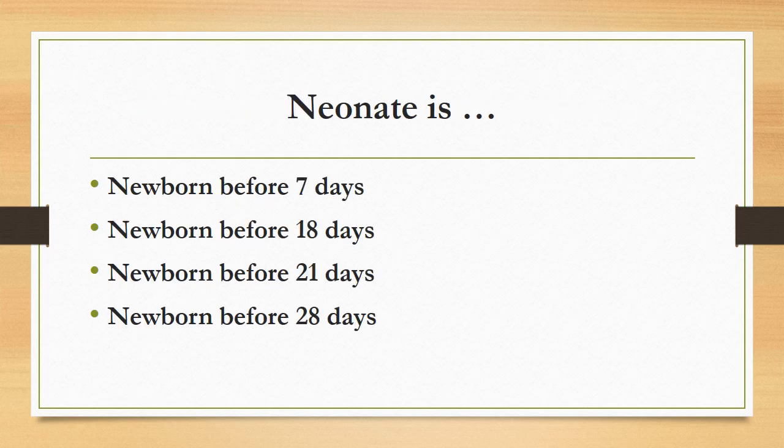A neonate is a newborn before 7 days, before 18 days, before 21 days, or before 28 days? The correct answer is a newborn before 28 days. A newborn up to 28 days of age is called a neonate.